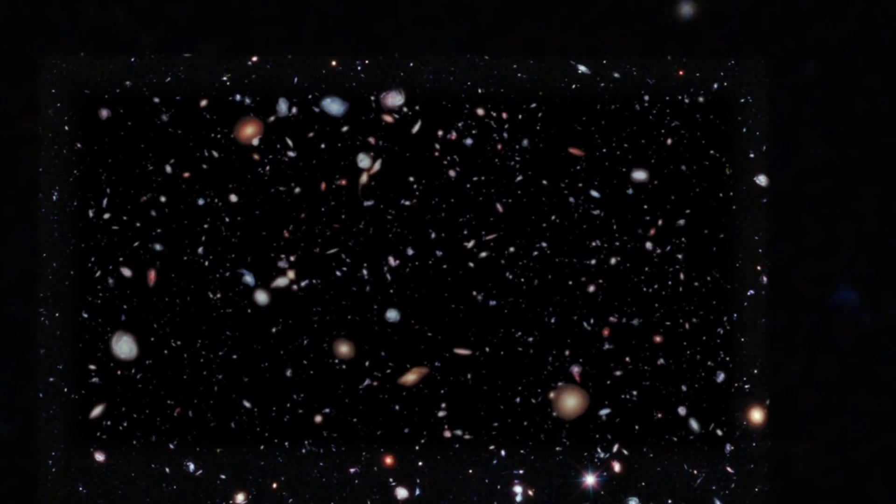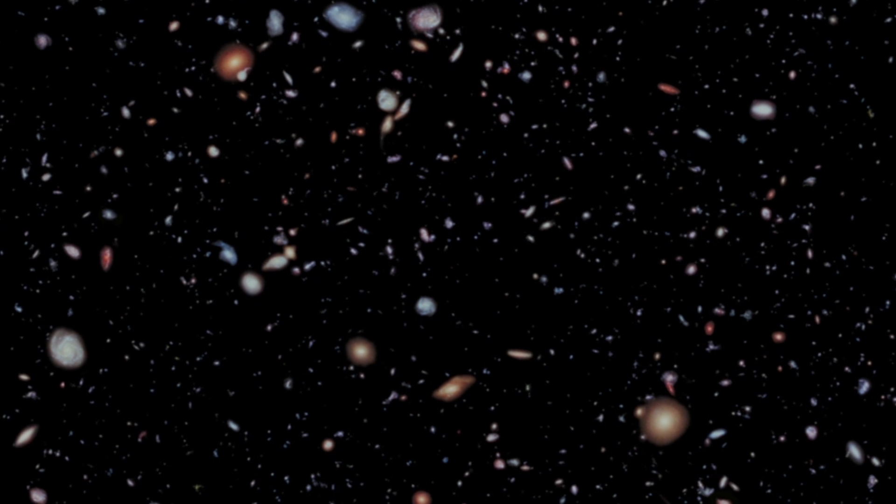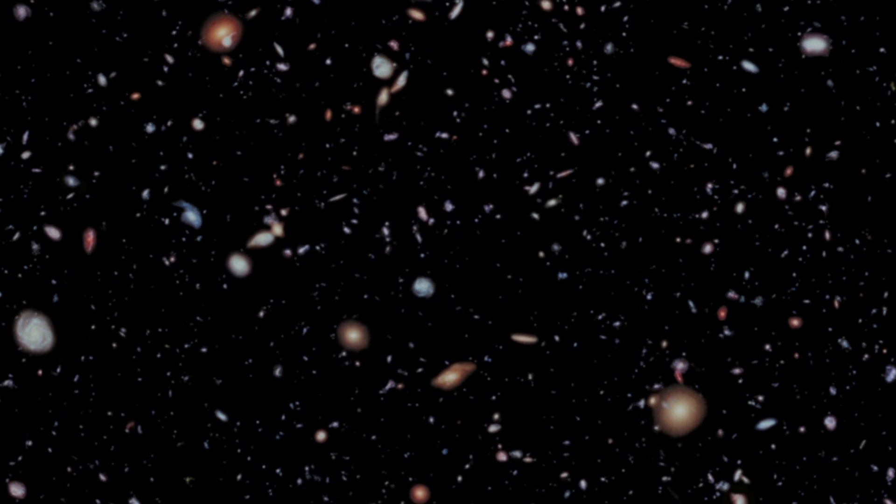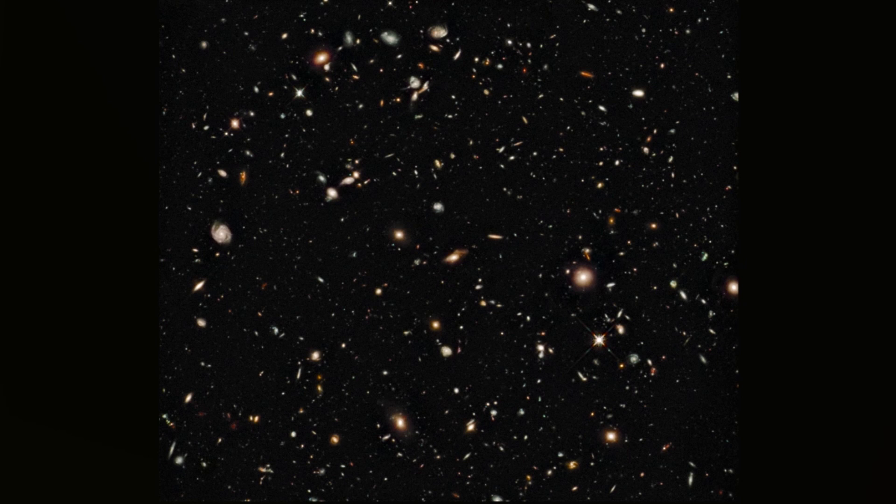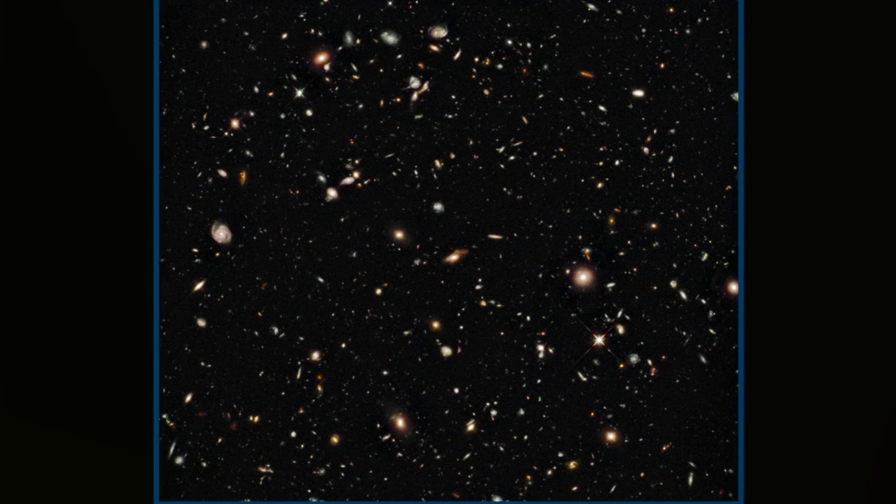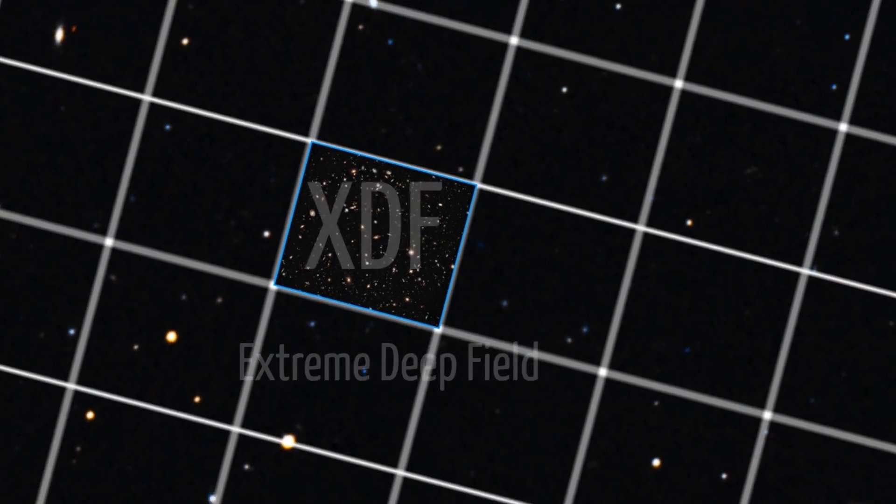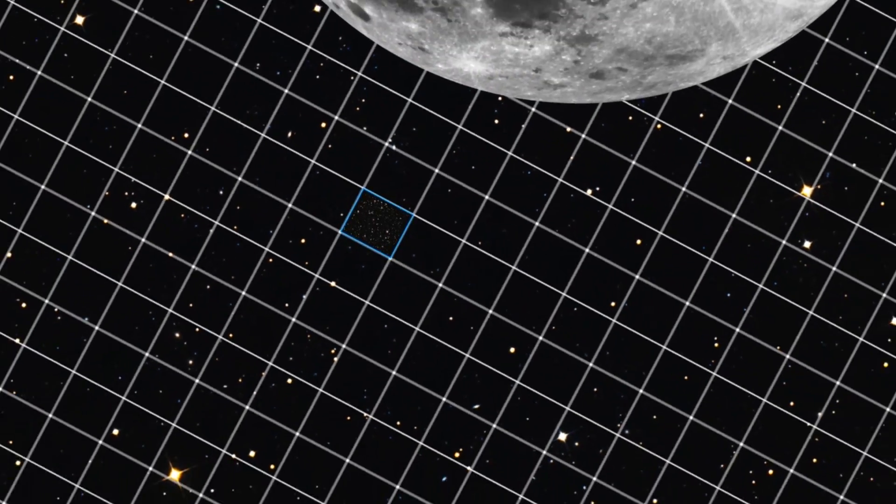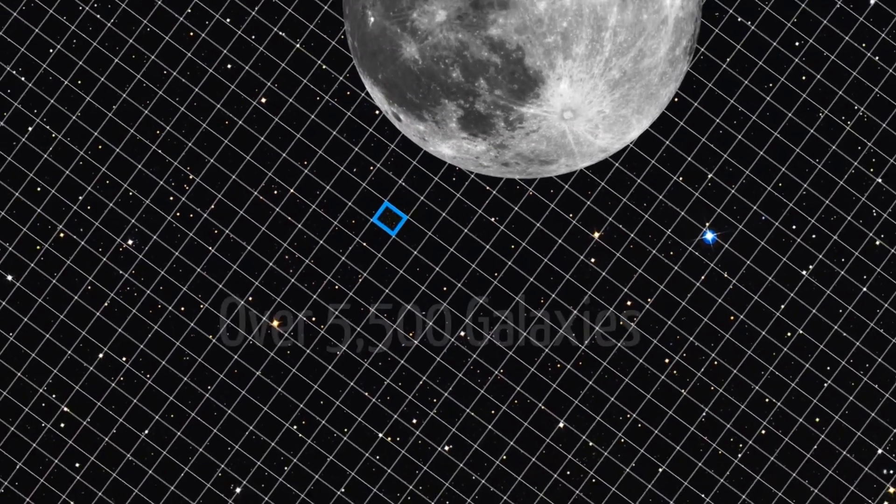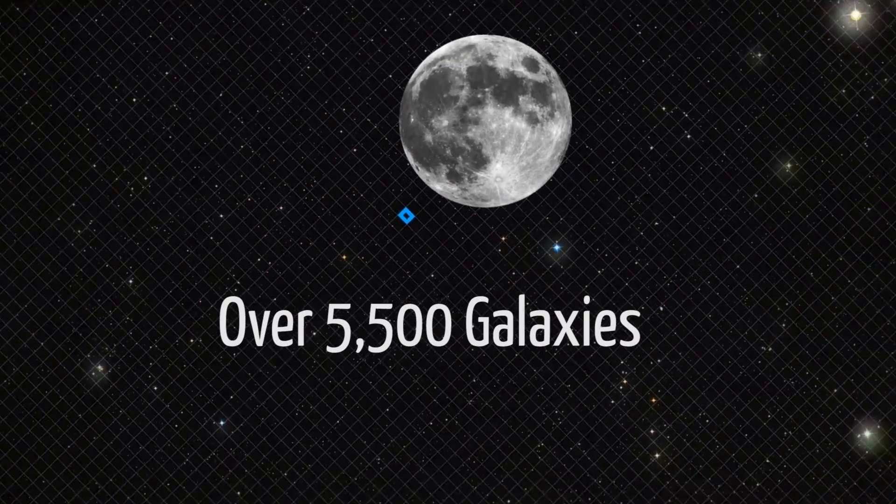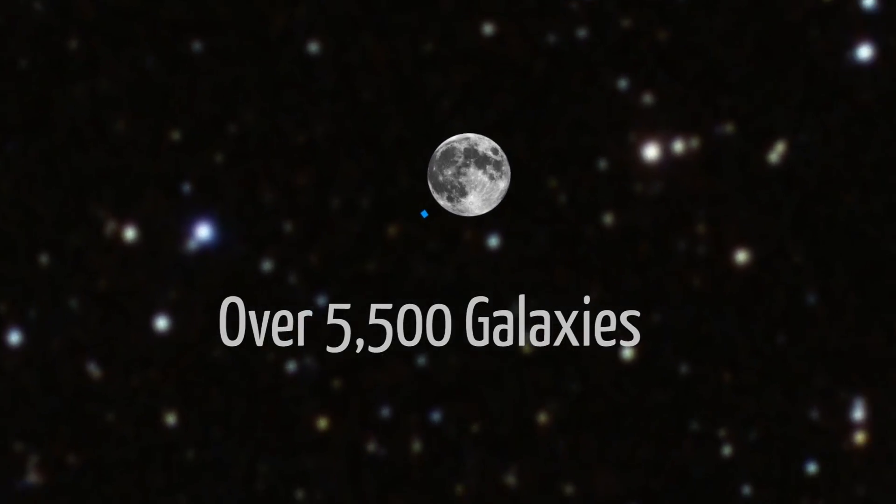NASA, using years of deep space photographs, have created the most far-reaching image of a section of space ever seen. The image, which NASA are calling the Extreme Deep Field or XDF, was created using a decade of Hubble Space Telescope photographs and is said to contain over 5,500 galaxies, including some of the earliest galaxies in the universe.